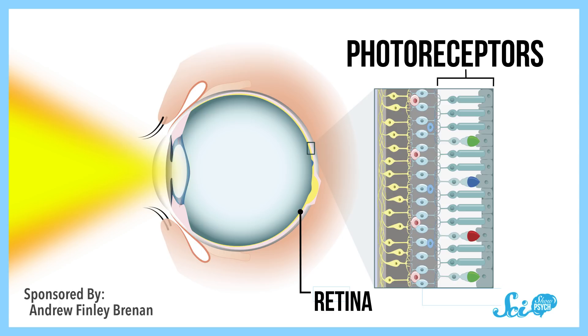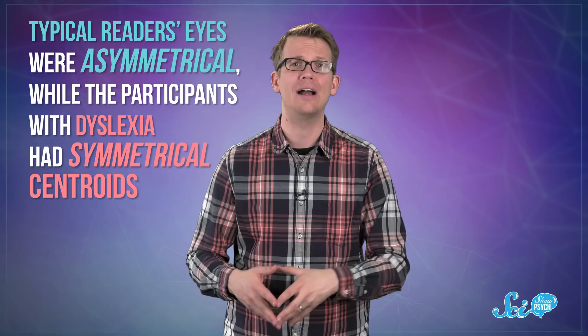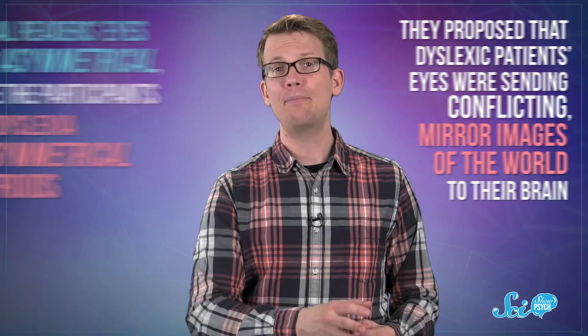The brain gets a stronger signal from one eye when it's processing visual information. In this study, the researchers looked at eye dominance by studying a region of the retina called Maxwell spot centroids. Essentially, they found that typical readers' eyes were asymmetrical, while the participants with dyslexia had symmetrical centroids. And they proposed that dyslexic patients' eyes were sending conflicting mirror images of the world to their brain.